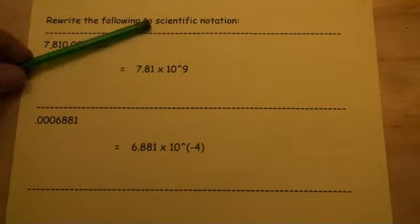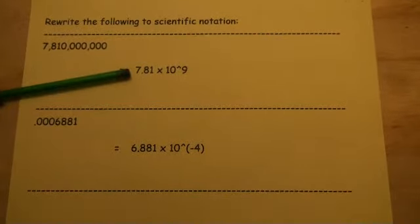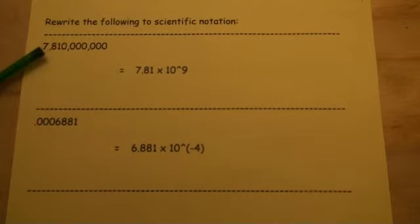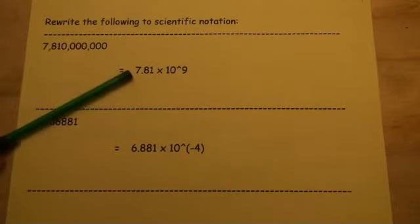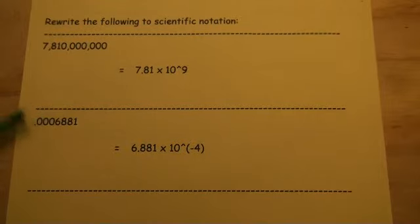Guys, scientific notation is specific to the fact that you will have one decimal place in front of the—I'm sorry—one digit in front of the decimal place. So it won't, you won't write this as 78.1. It'll always have just the one digit.